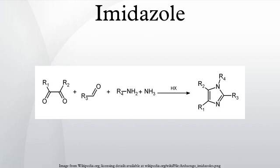Imidazole is an organic compound with the formula C3H4N2. It is a colorless solid that dissolves in water to give a mildly alkaline solution. In chemistry, it is an aromatic heterocycle, classified as a diazole and as an alkaloid.